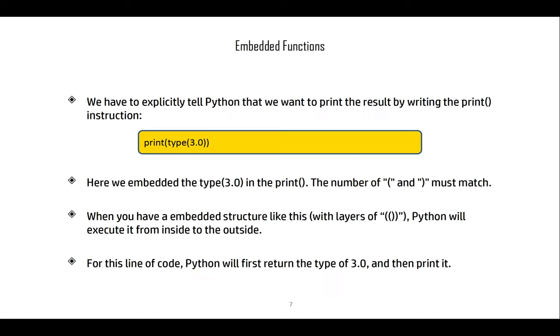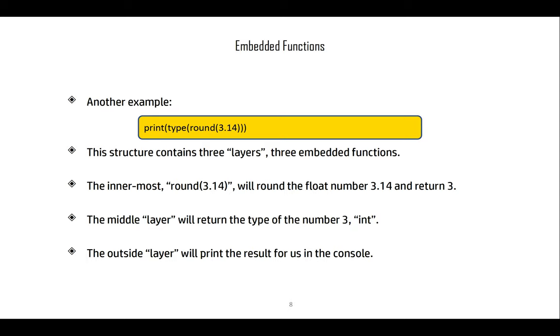You need to embed the functions and explicitly tell Python that you want to print the result of the type function. Type outputs a string, and you need to tell print to print that string. Proper embedding is important. Notice that the print function takes a parameter between parentheses, and so does the type function. We need to open both parentheses and close both at the end.